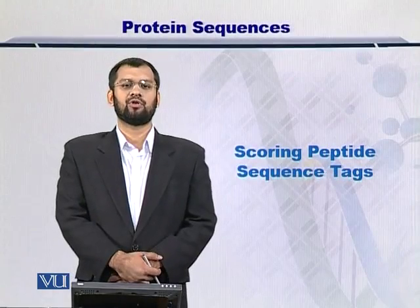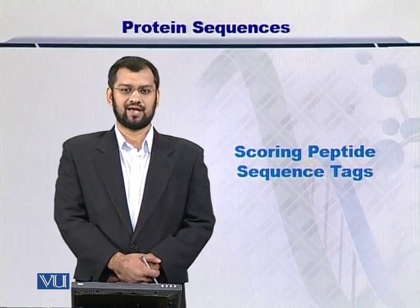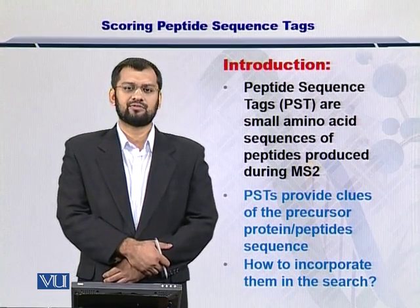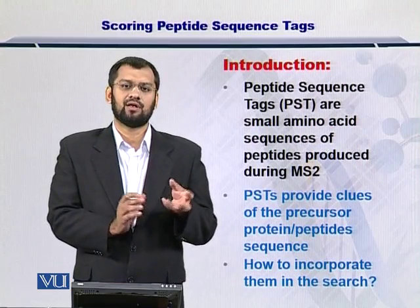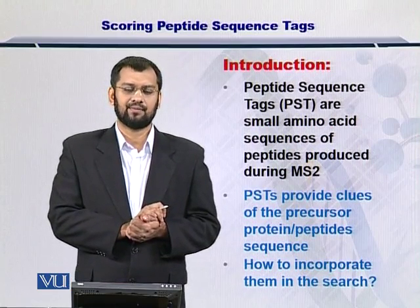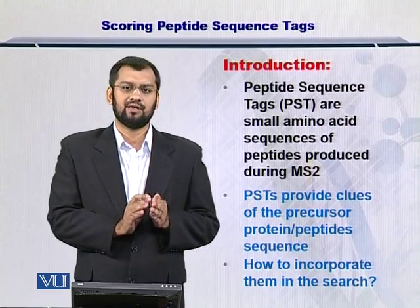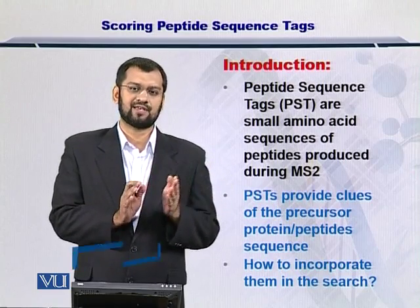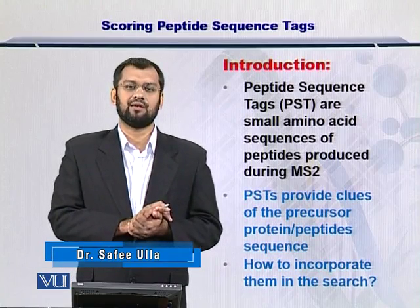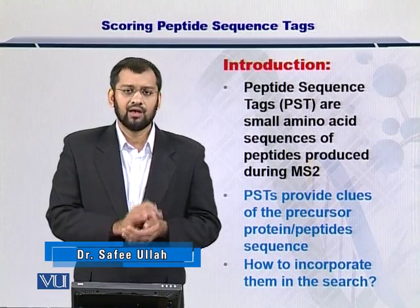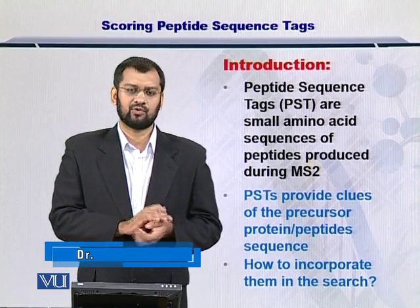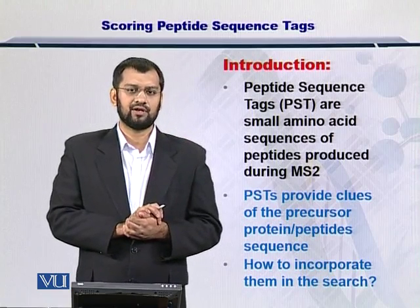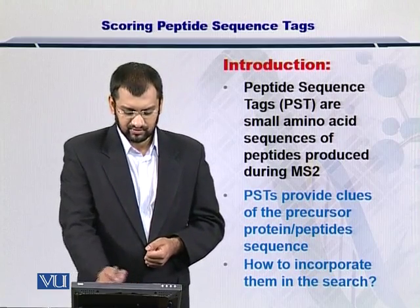Dear students, in this module we are going to try and score the peptide sequence tags. The peptide sequence tags were just small amino acid sequences that were reported from the MS2 data. Now we have searched these PSTs in the protein sequence databases and those proteins that have those peptide sequence tags are now collected in the form of a candidate protein list. It is very important in the protein search process because each PST gives you a clue about the precursor protein.